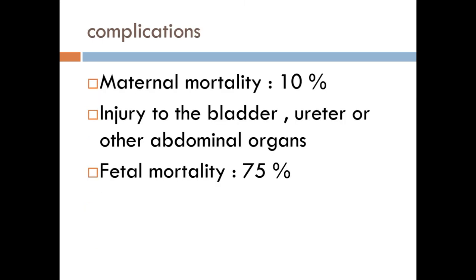Complications of ruptured uterus: it is one of the most common causes of maternal and fetal mortality. Maternal mortality is about 10% and fetal mortality is about 75%. During repair, many types of trauma can occur, such as injury to the bladder, ureter, or other abdominal organs.